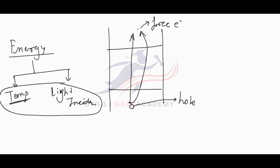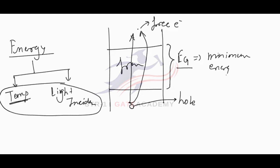To move an electron from the valence band to the conduction band, we have to supply some energy. This energy band which separates the valence band and the conduction band is called the forbidden energy band, and the width of the forbidden energy band, EG, represents the minimum energy required to be supplied in order to move an electron from the valence band to the conduction band.